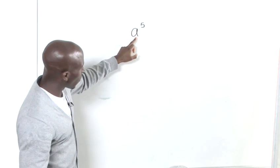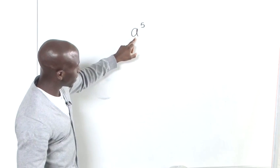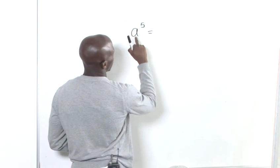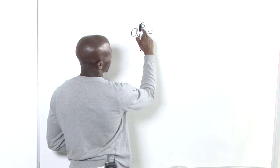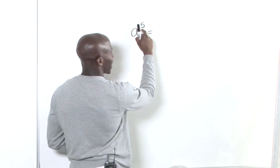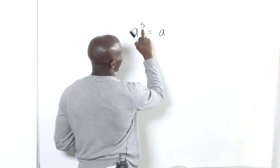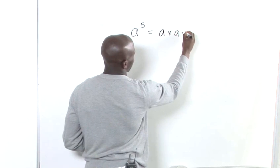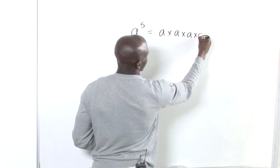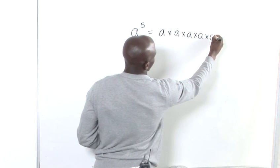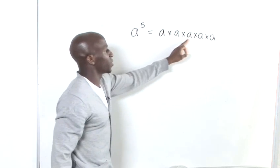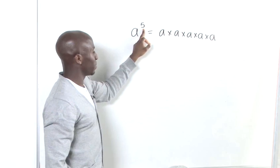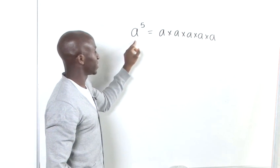If you want to look at what this actually means in full, you would say you have an 'a' being multiplied by itself and you need to write out that many a's — so, 5 a's. We've got 1, 2, 3, 4, 5 a's multiplied together, and that is pretty much the definition of this.